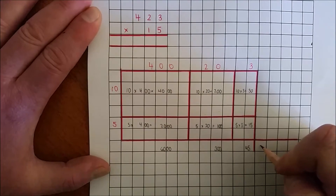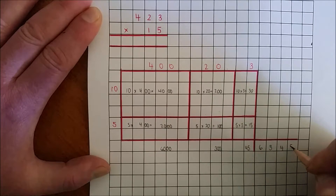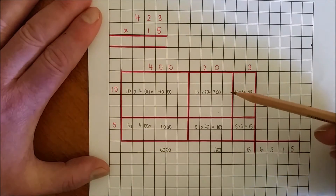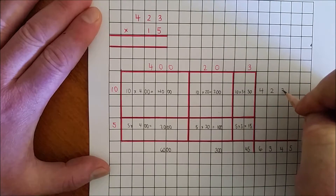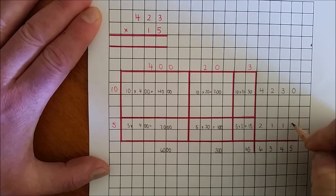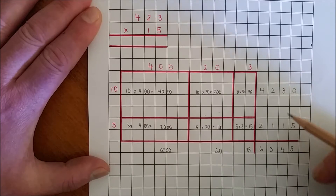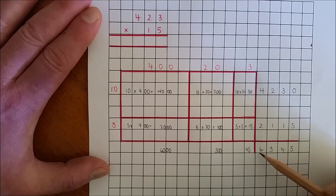That gives 6,345. I can check my answer by adding the numbers row by row: 4,230 and 2,115. Adding these two subtotals: 5 ones and 1 one are 5 ones; 3 tens and 1 ten are 4 tens; 2 hundreds and 1 hundred is 300; and 4,000 and 2,000 is 6,000. The answer is 6,345.